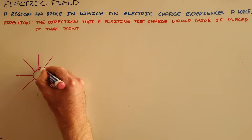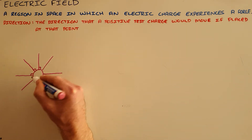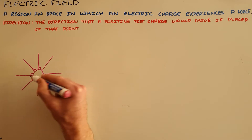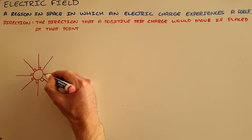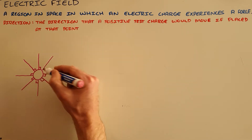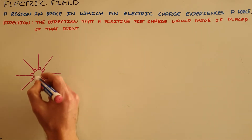Field lines must always be drawn perpendicular to the surface on which they originate. Field lines may never cross or touch, because that would suggest that there are two different electric fields at a specific point.